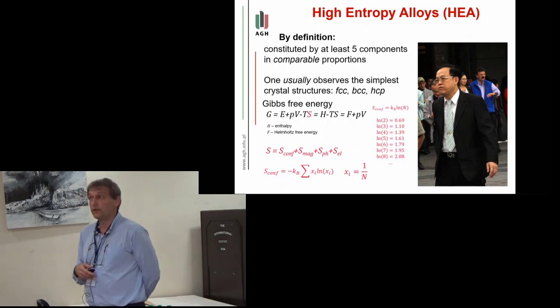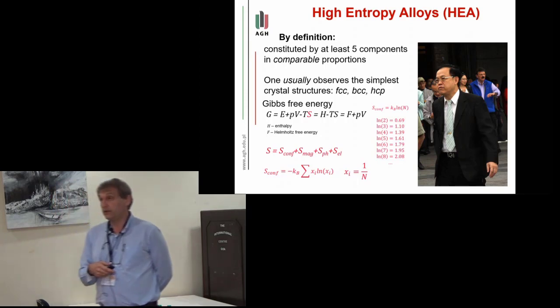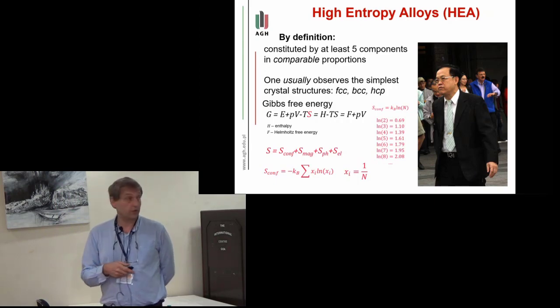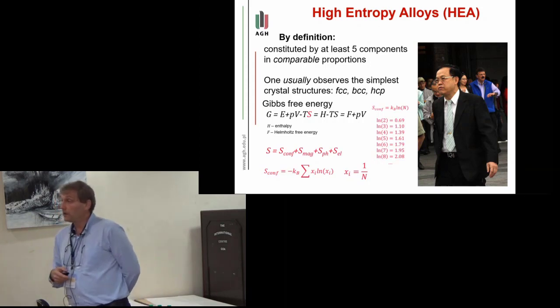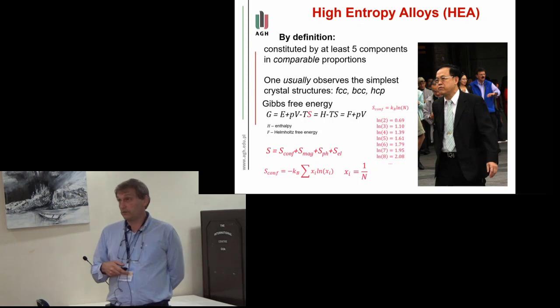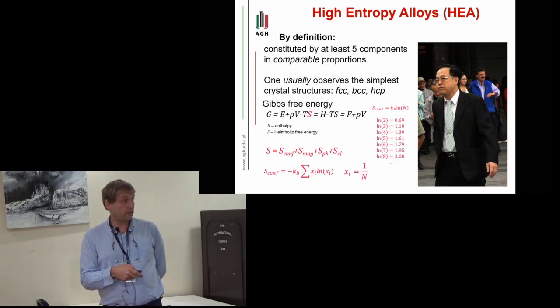What is responsible for this is Gibbs free energy. In this case, it is a competition between the enthalpy and the term connected with entropy. So you can lower the Gibbs free energy in two ways: by lowering the enthalpy but also by increasing the entropy.